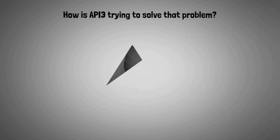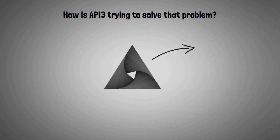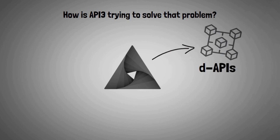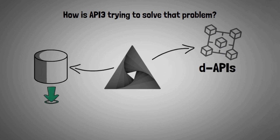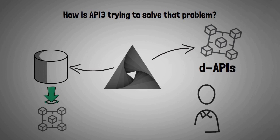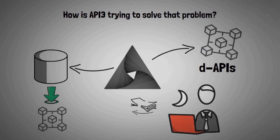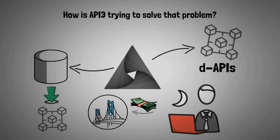API3 believes that by building decentralized APIs, or dAPIs, API3 has made it easier to take non-blockchain data and import it onto the blockchain. This means that developers won't have to pay a gatekeeper company or use proprietary technology for their application's data to be compatible with blockchains.